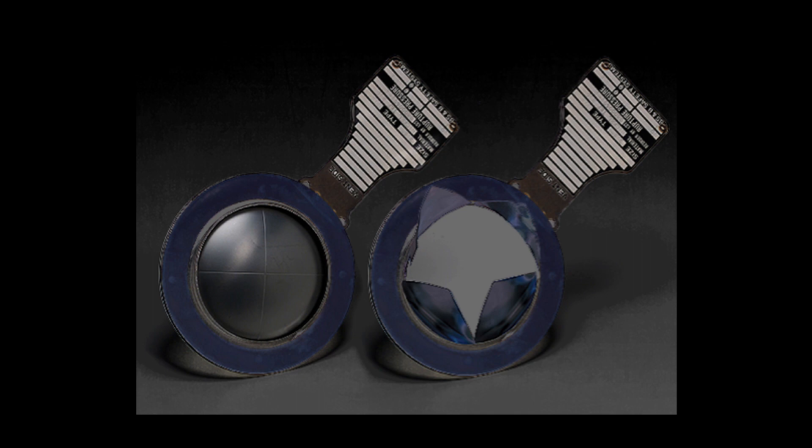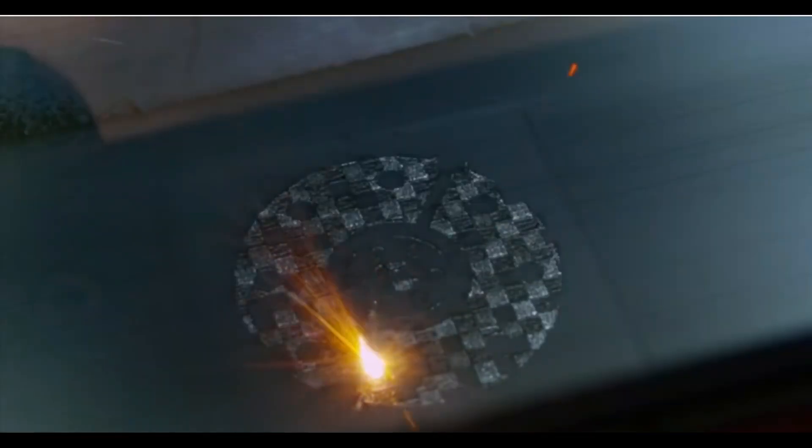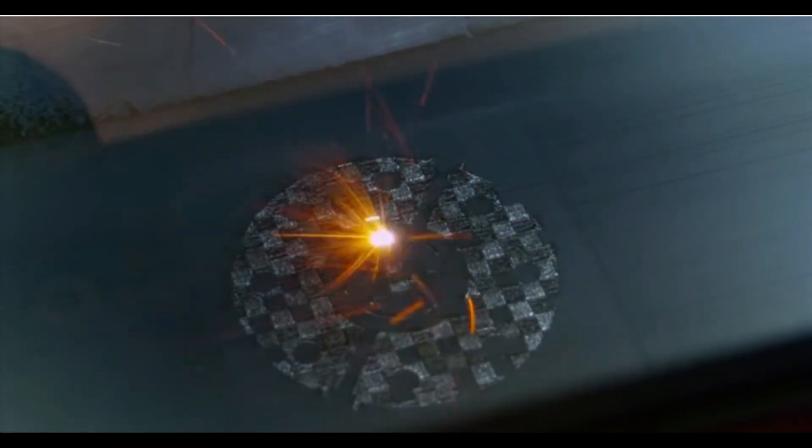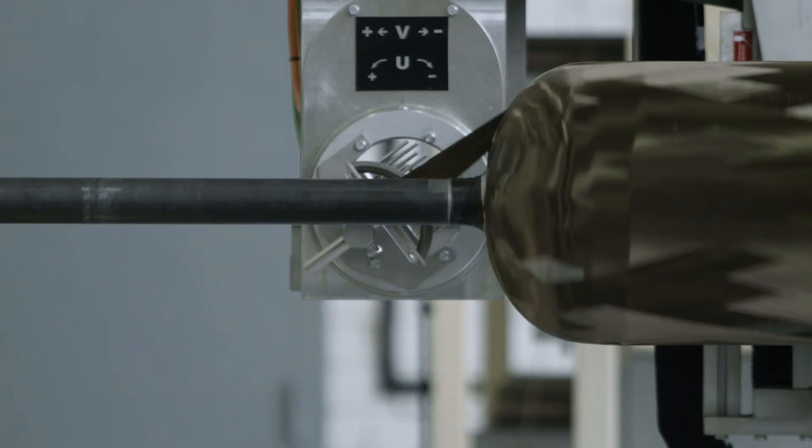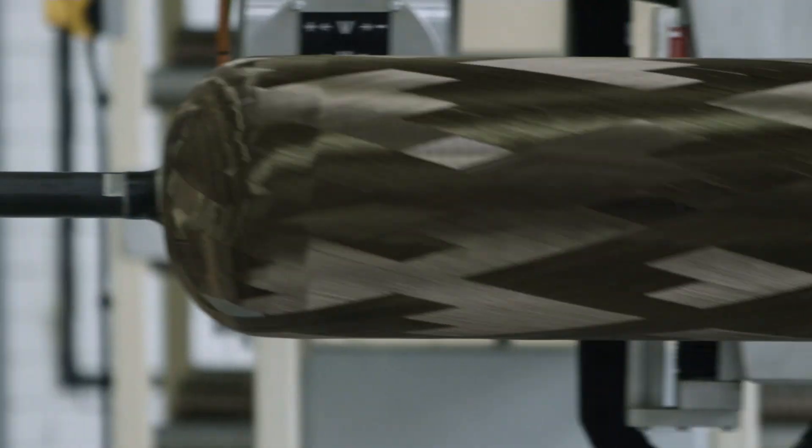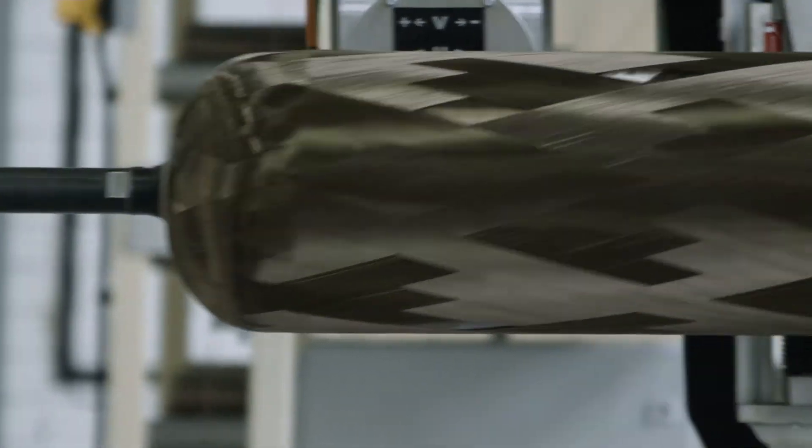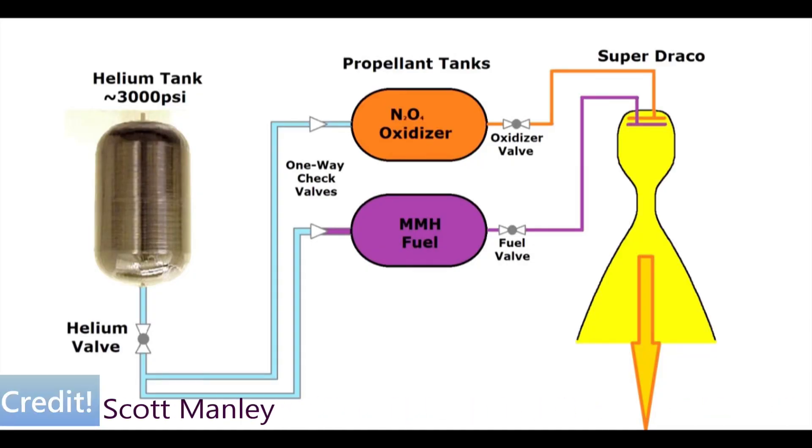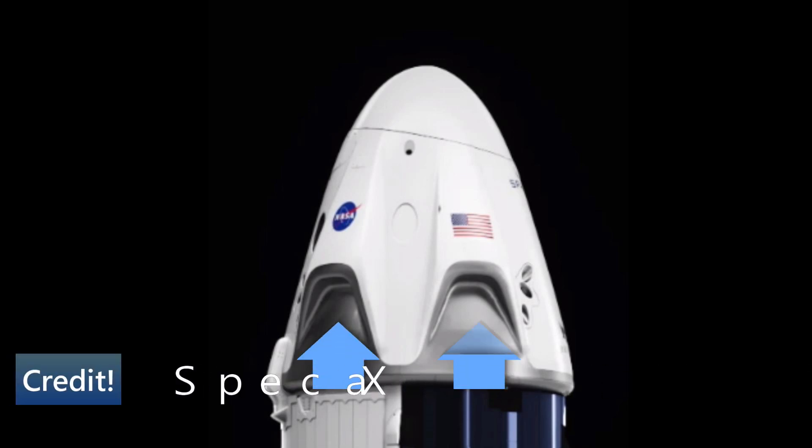The Super Draco engines are 3D printed using laser sintering of Inconel, an alloy of iron and nickel. Composite carbon overwrapped titanium pressure vessels hold pressurized helium and use this to push fuel and oxidizer into the engines. Flaps cover the engines so that if they are not fired, seawater won't get into them during splashdown and recovery. This allows the capsule to be refurbished and reused several times.